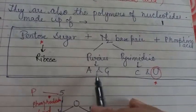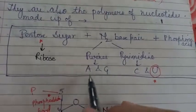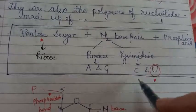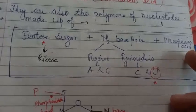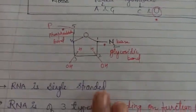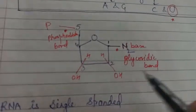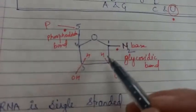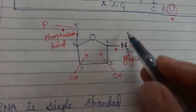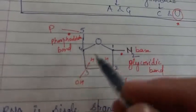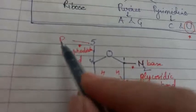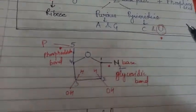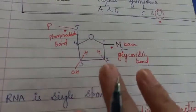The nitrogenous base pairs in RNA - in purines they have adenine and guanine and in pyrimidines they have cytosine and uracil. And then phosphoric acid is also there. So this is the structure of one nucleotide. A pentose sugar which is ribose, nitrogenous base joined on the first carbon and on the fifth carbon phosphodiester bond is formed to join this phosphoric acid.